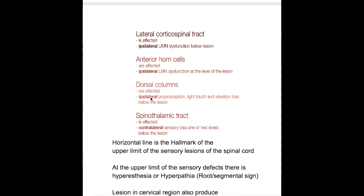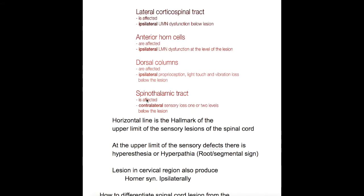Dorsal column damage produces ipsilateral defects in proprioception, light touch, and vibration sensation. Lateral spinothalamic tract damage produces contralateral sensory loss one or two levels below the lesion. The anterior horn cell defect is the only one that produces a defect at the level of the lesion, whereas the lateral corticospinal tract, dorsal column, and spinothalamic tract damage all produce defects below the level of the lesion.